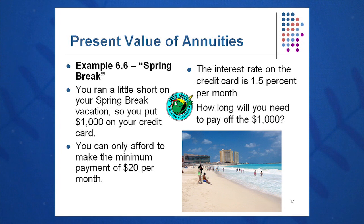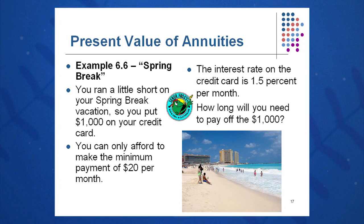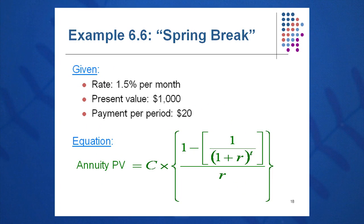Another example — a college student goes to Cancun on spring break, ends up putting $1,000 on their credit card. You come back to Happy Valley and reality, knowing you can only afford to pay $20 — the minimum — each month. The credit card rate is 1.5% per month. How long will you need to pay off that $1,000? Using the present value annuity equation — C times [1 minus 1 over (1 plus R) to the T], all over R — the rate is 1.5% per month, PVA is $1,000, and payment C is $20.